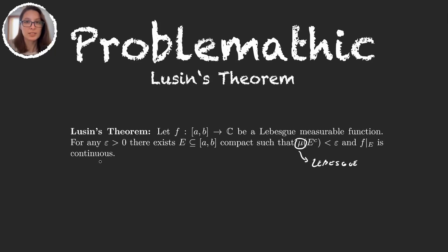This is amazing because it's telling us that any Lebesgue measurable function is continuous on some very large set. I can just take any epsilon and there will always be a compact set where our function is continuous, and that set is very big — it's almost the entire domain where we're working.